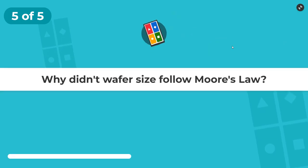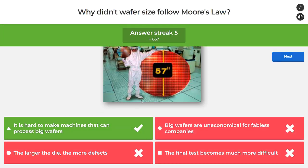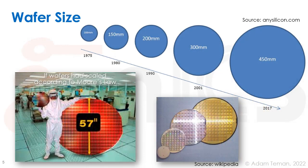The final question: why didn't wafer size follow Moore's law? Why don't we already have a 57-inch wafer? Is it because it's hard to make machines that can process big wafers, because big wafers are uneconomical for fabless companies, because larger dies have more defects, or because final tests become much more difficult? Wafer sizes grew from 100mm to 8-inch to 12-inch around year 2000, but a 15-inch wafer never happened.